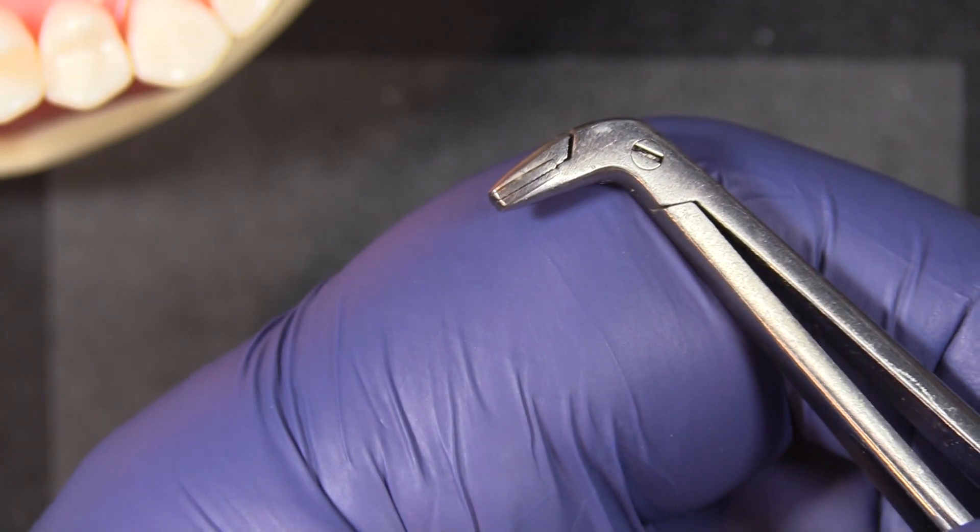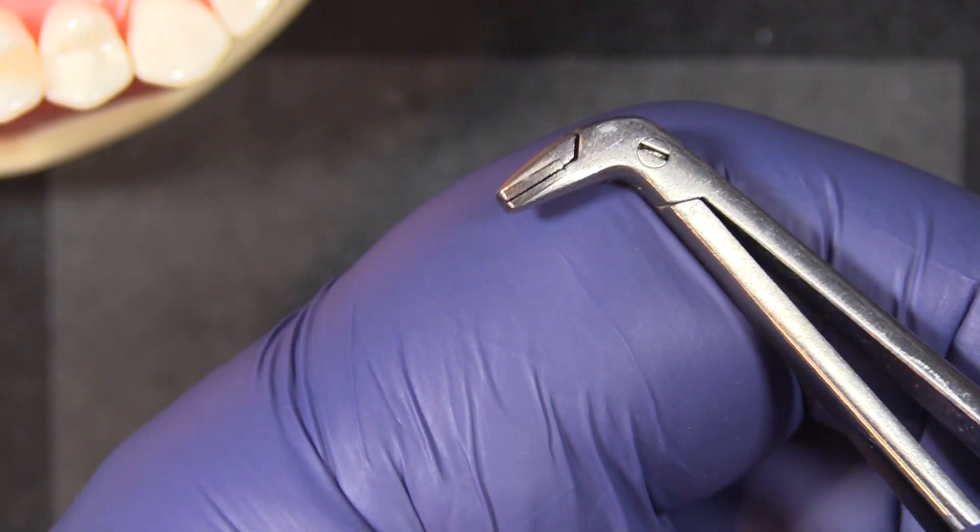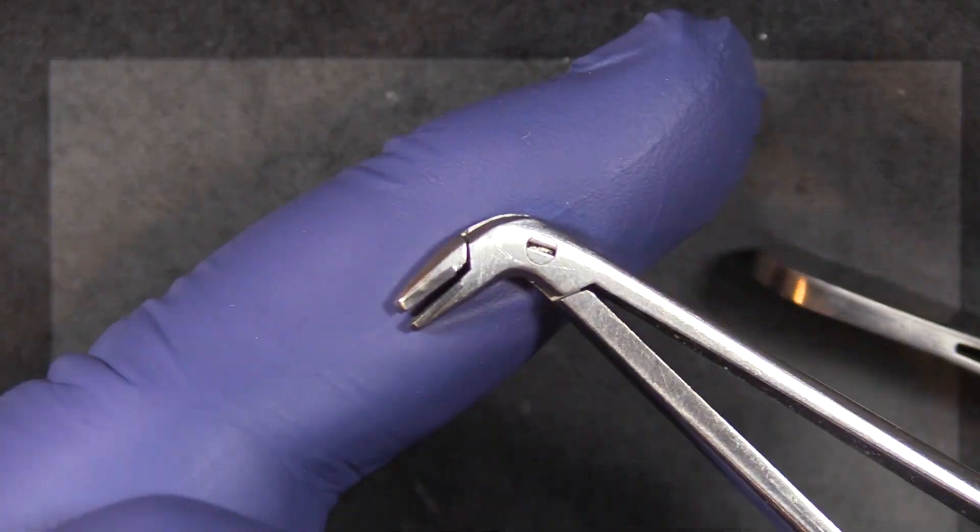They're interdigitating carbide teeth, so they fit together like regular teeth in a mouth and they create an incredible grip for removing the bands from a tight contact.